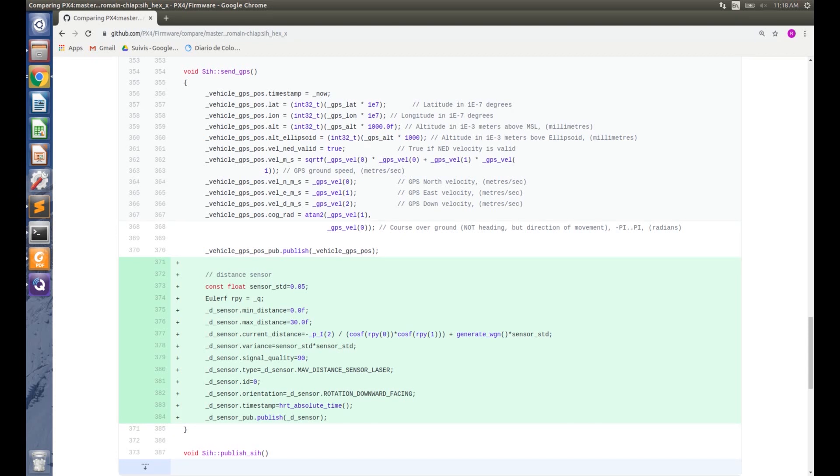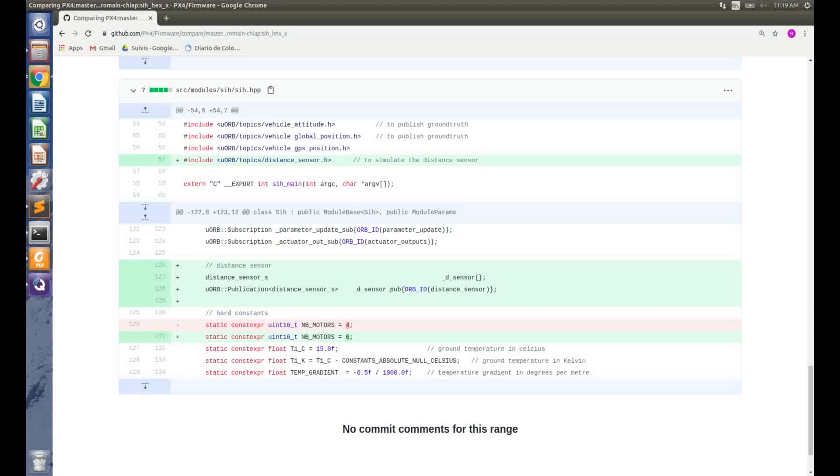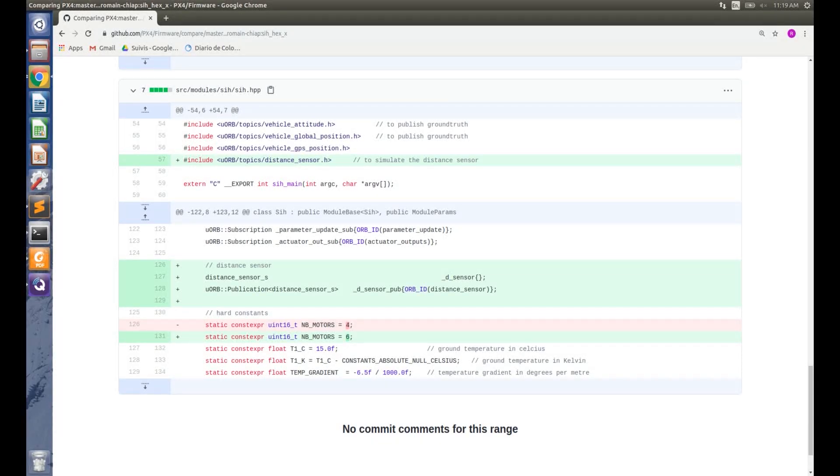I decided to publish the distance sensor in the function sendGPS to be published at 20 Hz as well. The standard deviation is chosen to be 0.05 m, the mean distance 0, and the max distance 30 m. A bit of trigonometry can give us the measured distance. The variance is the square of the standard deviation. And let's pretend a good signal quality as we simulate it as a laser sensor. The orientation is configured as downward facing. And finally, we store the timestamp and publish the UORB topic. In SIH.hpp, the header file for the UORB topic distance_sensor must be included, as well as the structure for it and the publication object. This is done at lines 127 and 128. And finally, we configure the number of motors to be 6. The function readMotors will automatically read 6 motors instead of 4. And that's it!